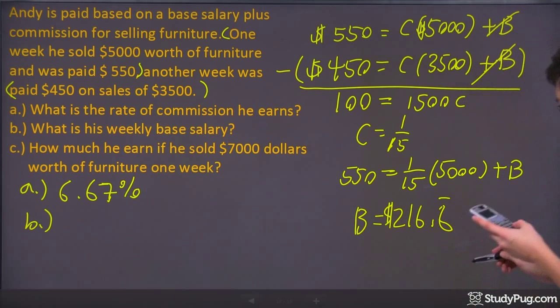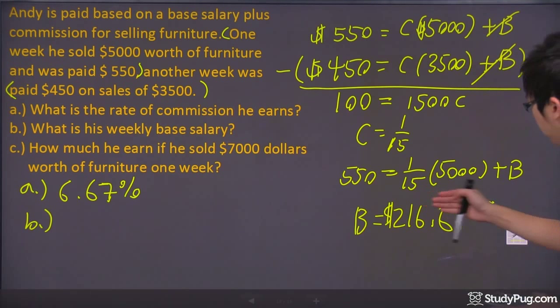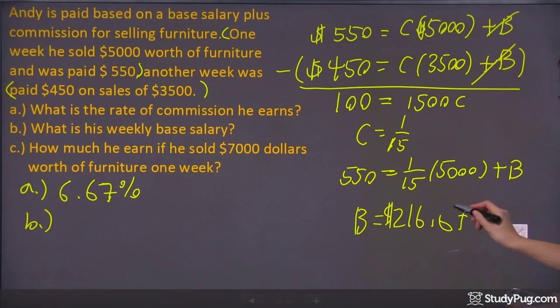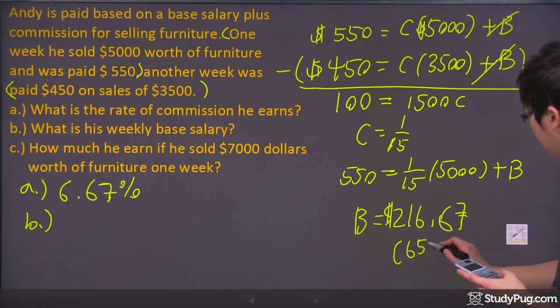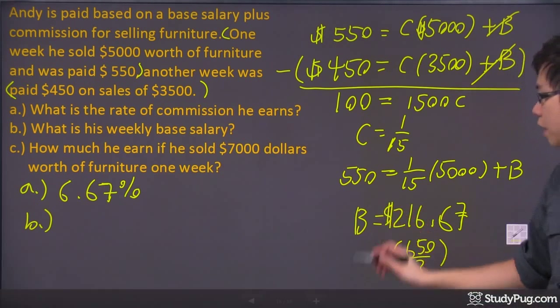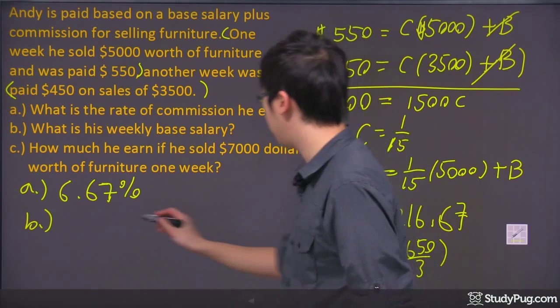But since it's money, it'll be 6.7. Let's cross out the repeating sign right up here. It'll be just 6.7. If you want a fraction, it will be just 650 over 3. That's my base salary right there.